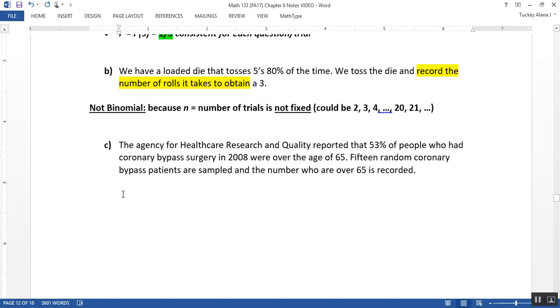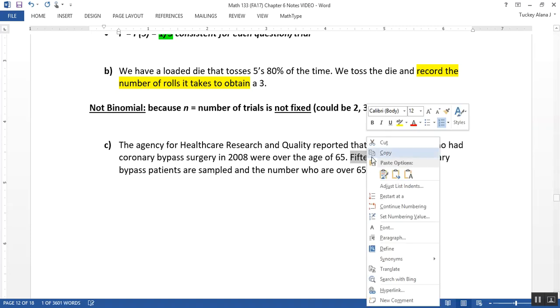All right. Next. The Agency for Healthcare Research and Quality reported that 53% of people who had coronary bypass surgery in 2008 were over the age of 65. Fifteen random coronary bypass patients are sampled, and the number who are over 65 is recorded. All right. Well, let's run through the list. Fixed number of trials. Seems like there is right here with the number 15. There's our fixed number of trials.